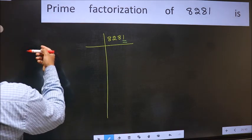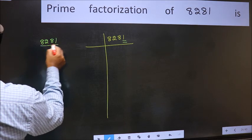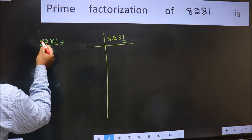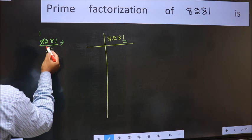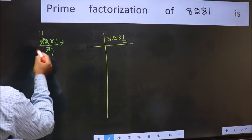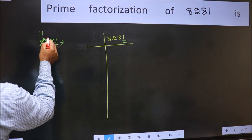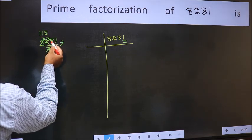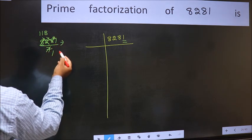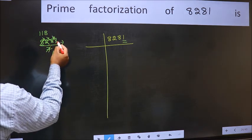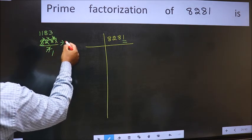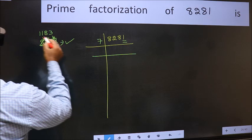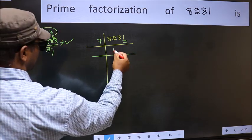Let us check divisibility by 7 here. A number close to 8 in 7 table is 7×1=7. 8-7=1, carried forward 12. A number close to 12 in 7 table is 7×1=7. 12-7=5, carried forward 58. A number close to 58 in 7 table is 7×8=56. 58-56=2, carried forward 21. When do we get 21 in 7 table? 7×3=21. No number has been left out so this is divisible by 7. So 7 here, and here we should write this number 1183.